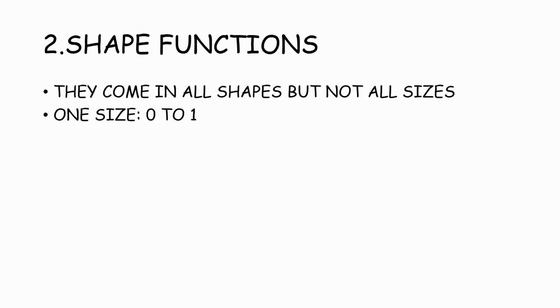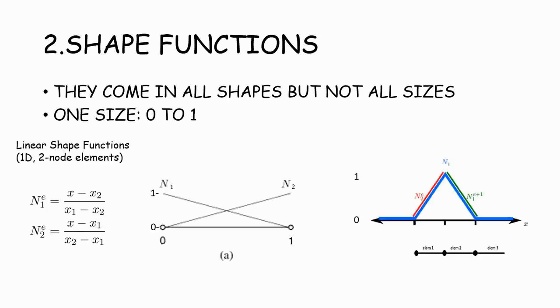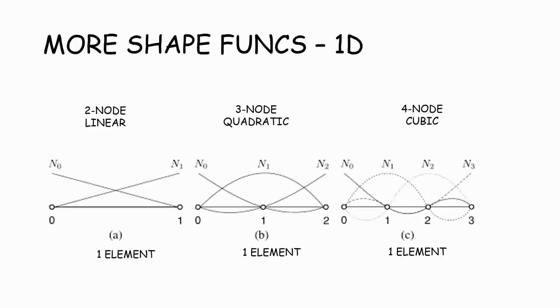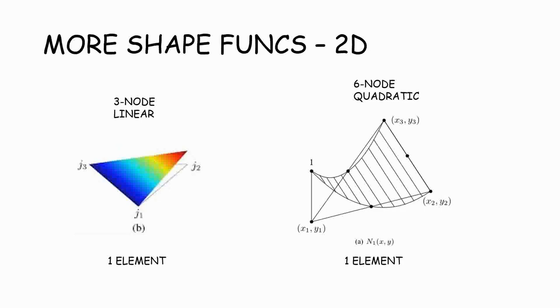Now another basic is shape functions, which are basically a fancy way of saying interpolation. What they do is tell the computer how much of the value at each node contributes to the continuous solution of the problem. These are examples of more nodes per element. So it's still one element, but the approximation is closer because instead of having straight lines, you have curves. And it can be extended to more dimensions as well.